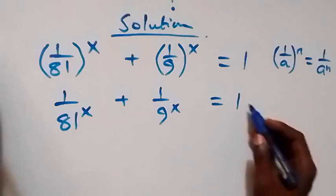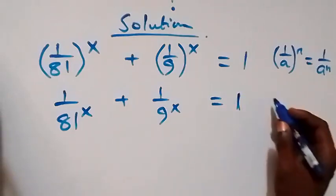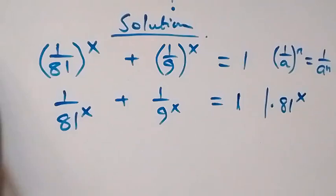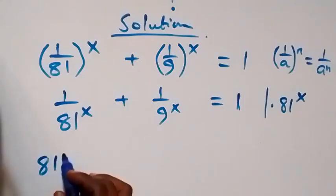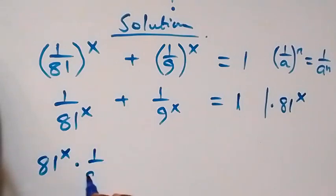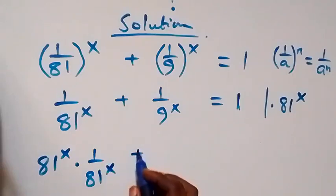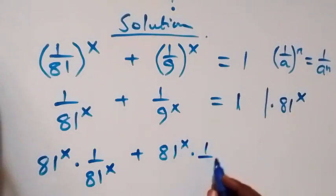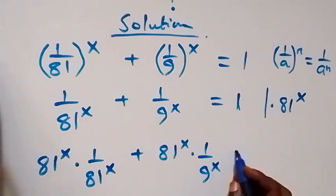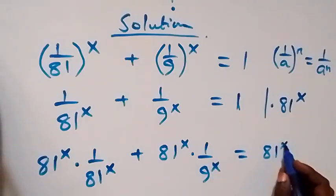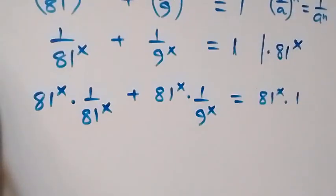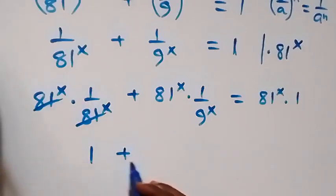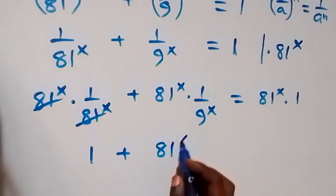Since the LCM is 81 raised to power x, we can multiply through by 81 raised to power x. That gives us 81 raised to power x times 1 over 81 raised to power x, plus 81 raised to power x times 1 over 9 raised to power x. The first terms cancel, leaving 1, plus 81 raised to power x over 9 raised to power x.